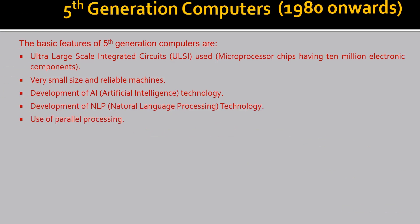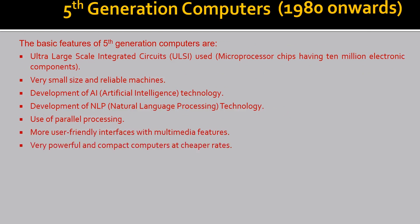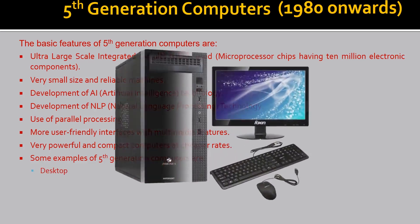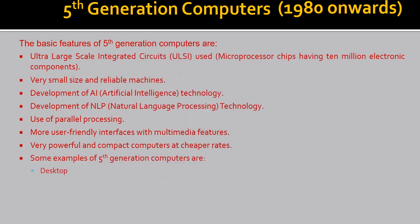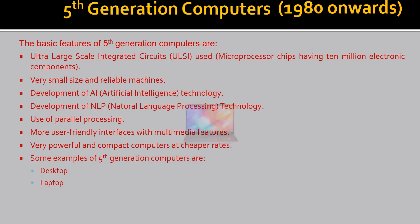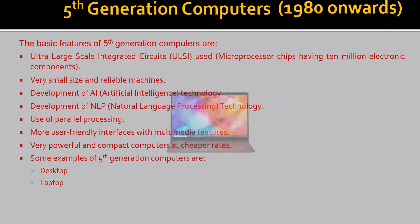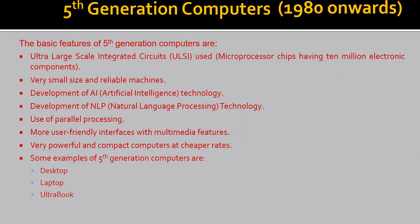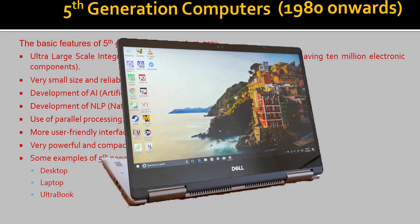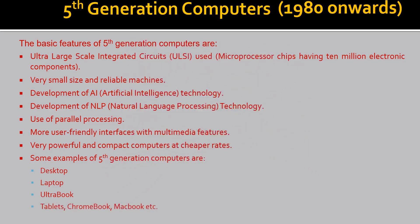5th generation computers also used parallel processing. They have more user-friendly interfaces with multimedia features, and are very powerful and compact at cheaper rates. Some examples are desktops, laptops, ultrabooks, tablets, Chromebooks, MacBooks, and many more.